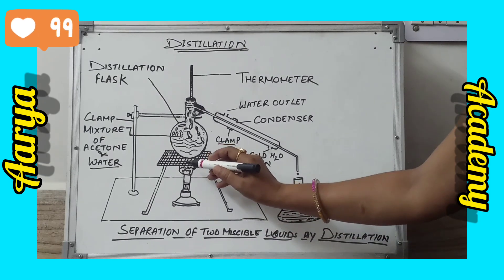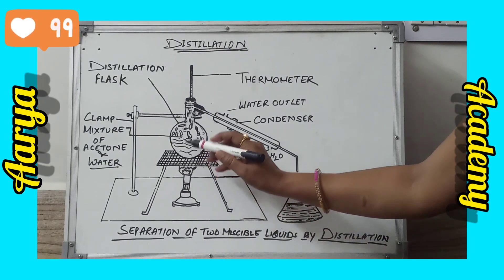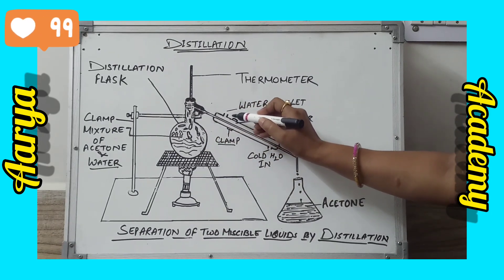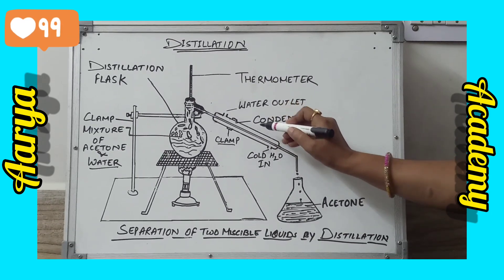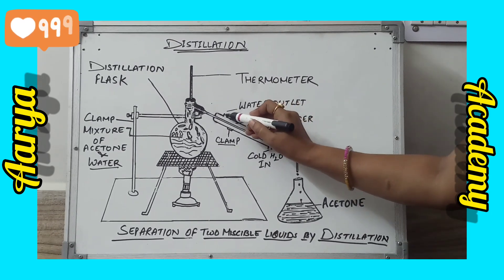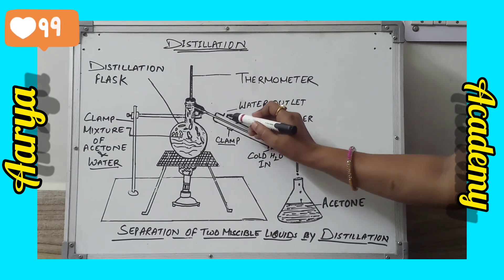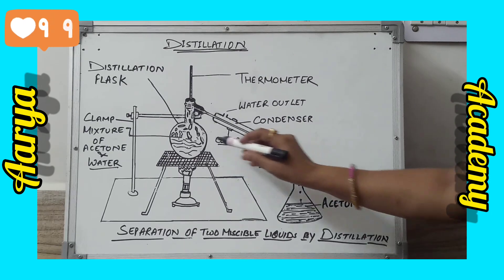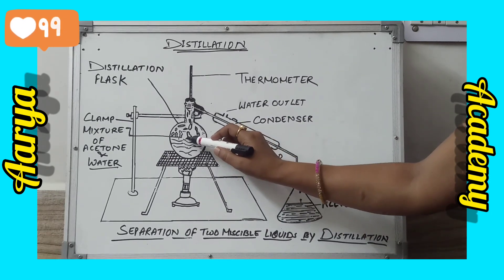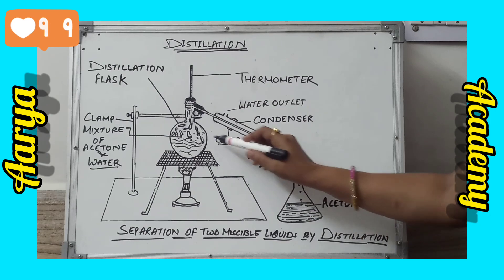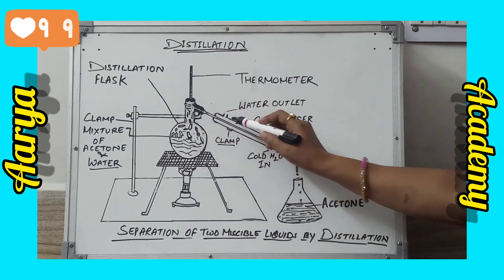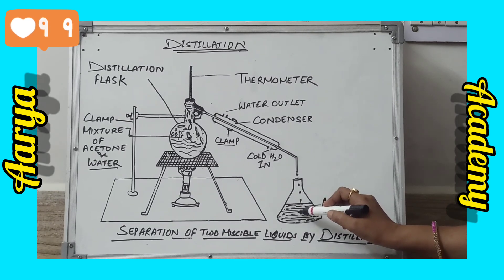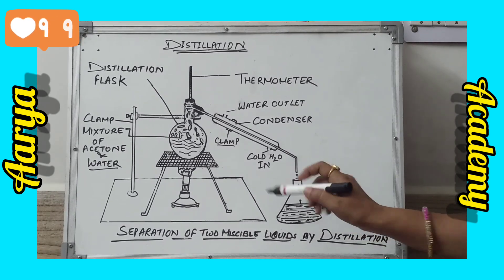As we heat the mixture, the acetone vaporizes and the vapor moves towards the condenser, where it condenses. The condensed acetone is collected from the condenser outlet. The water is left behind in the distillation flask. The condensed acetone then moves forward and is collected in the receiver.